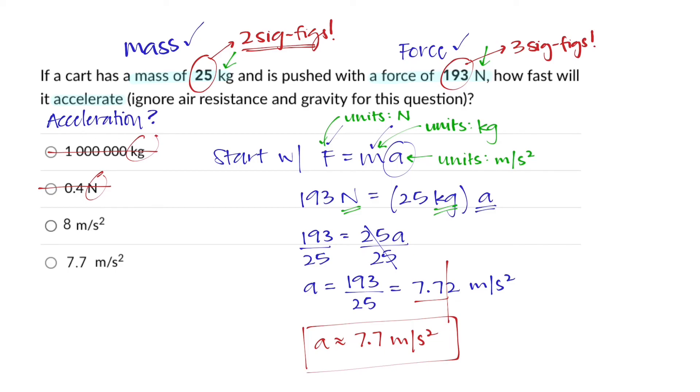Of the two options here, one says 8 meters per second squared, which would have been okay if we needed to round up to one significant figure. But because we're looking for two significant figures, that's not the correct answer either. And so of our four options, we will go with the last one, since that's what we also calculated.